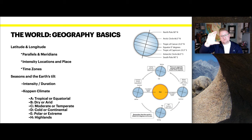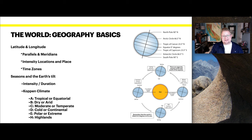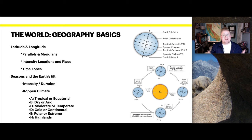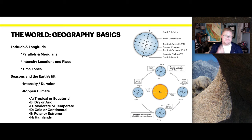Because of lines of longitude, we're able to identify time zones, which we'll address later in this course. We also know the Earth is tilted, and because of that tilt, it changes the intensity and duration of the sun's energy absorbed along the Earth's surface. That in turn can affect our weather and long-term data known as climate.